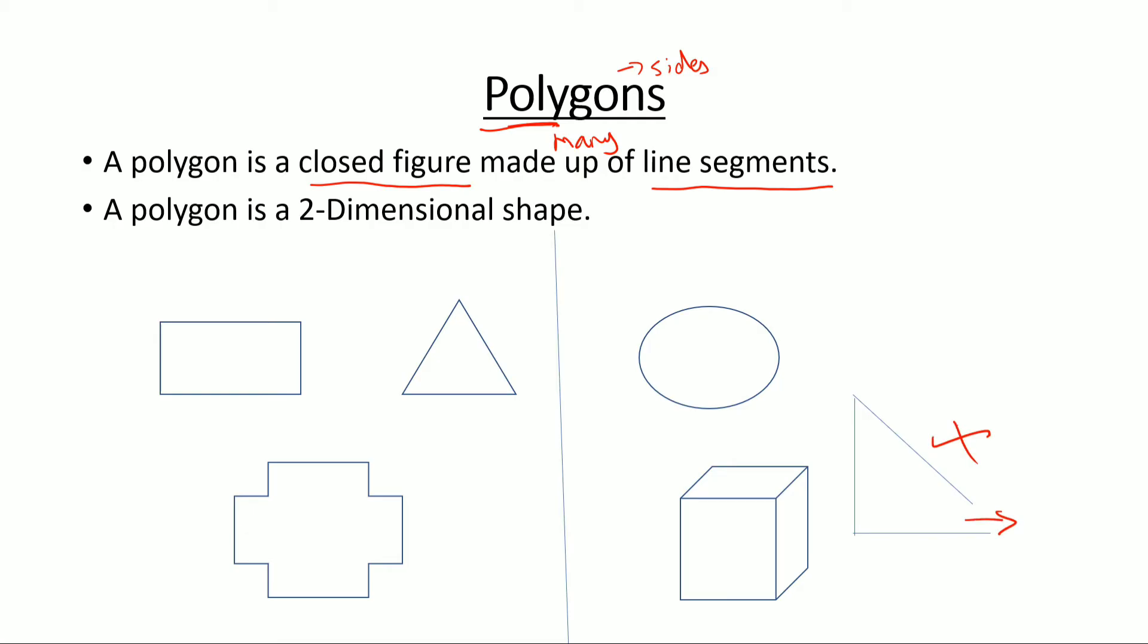Now it should also be made up of line segments. That means there should be no curves. Like here if you observe, it's curved, right? It's an oval shape. So this is not a polygon.